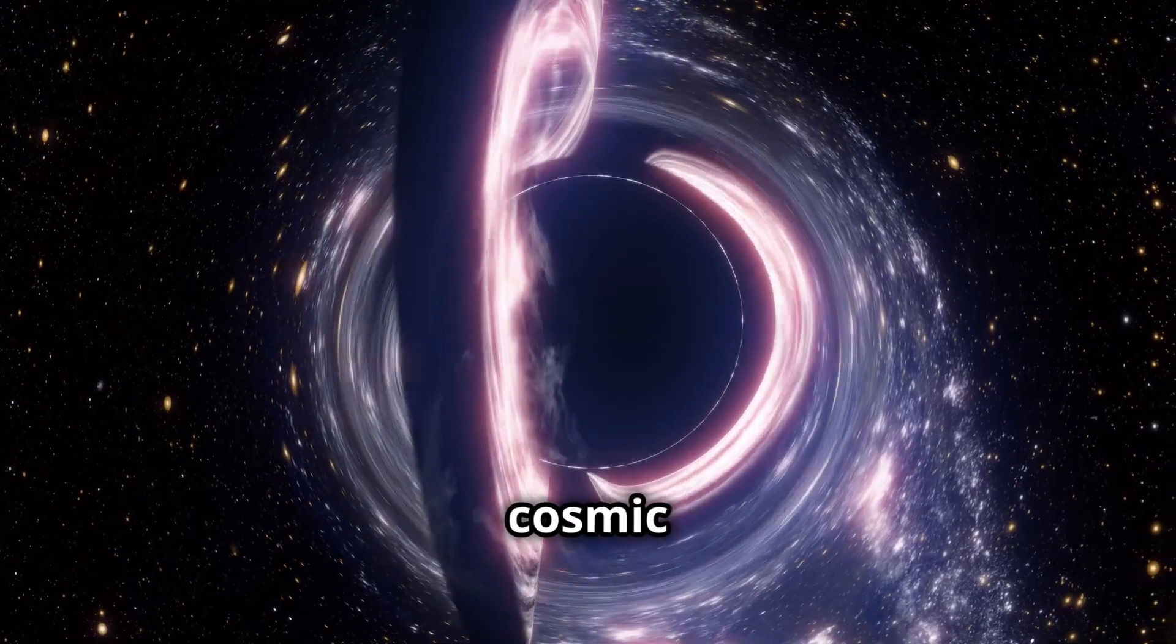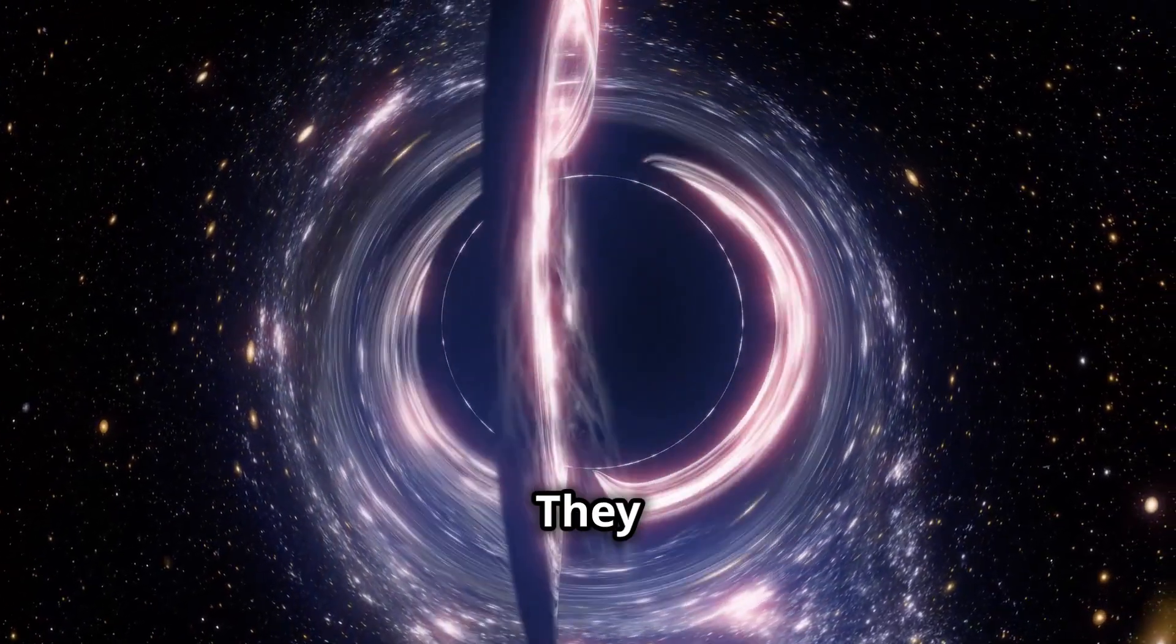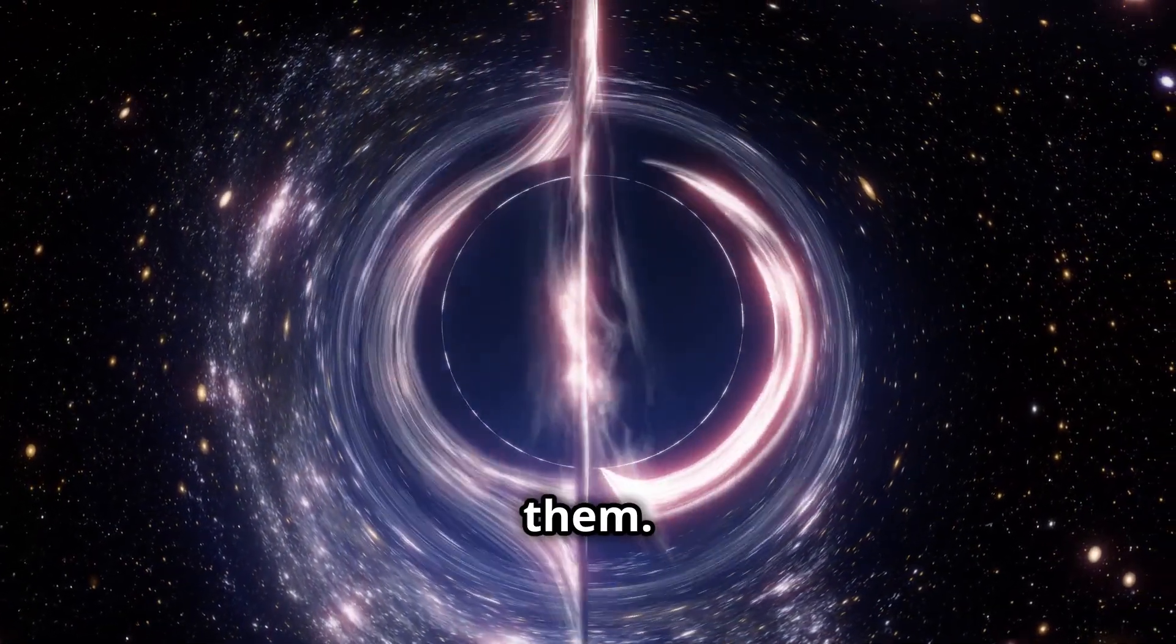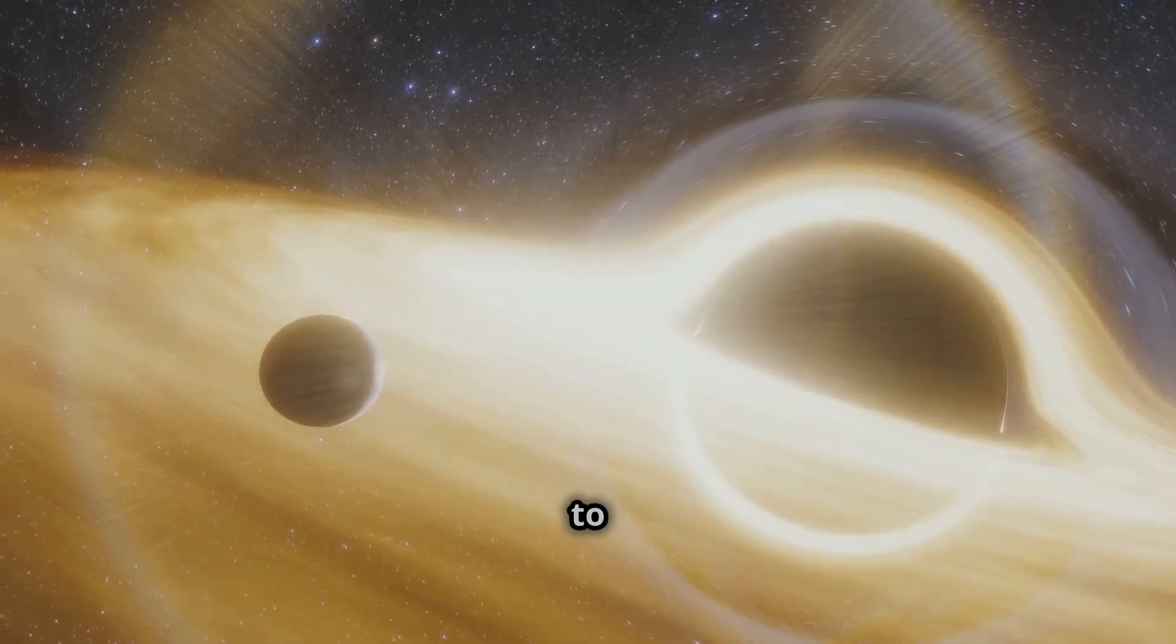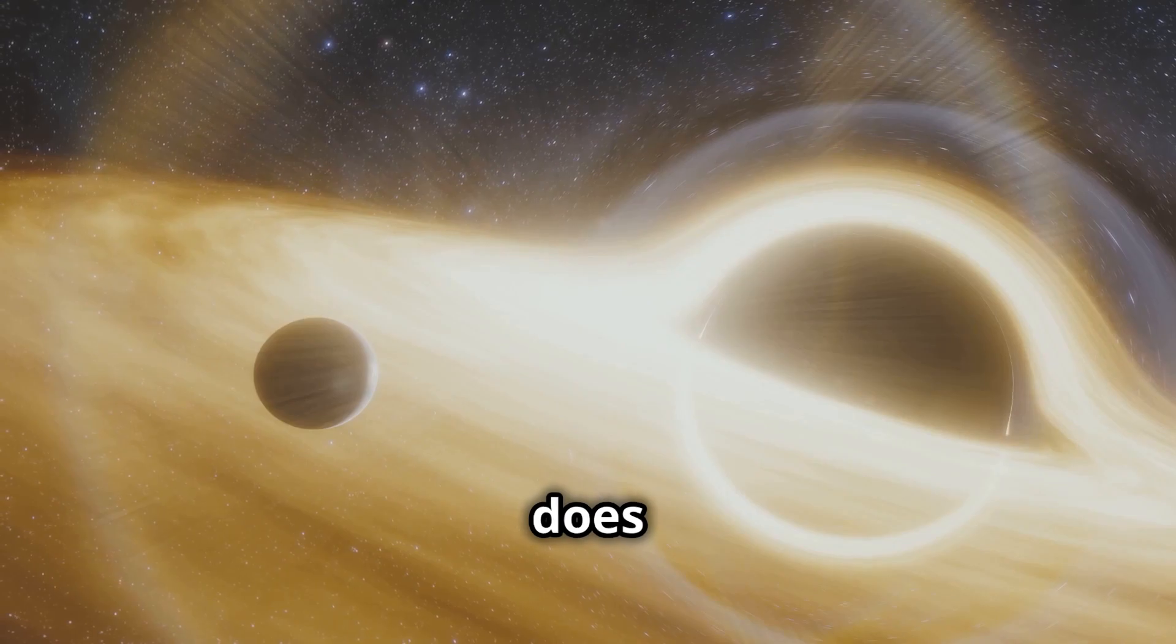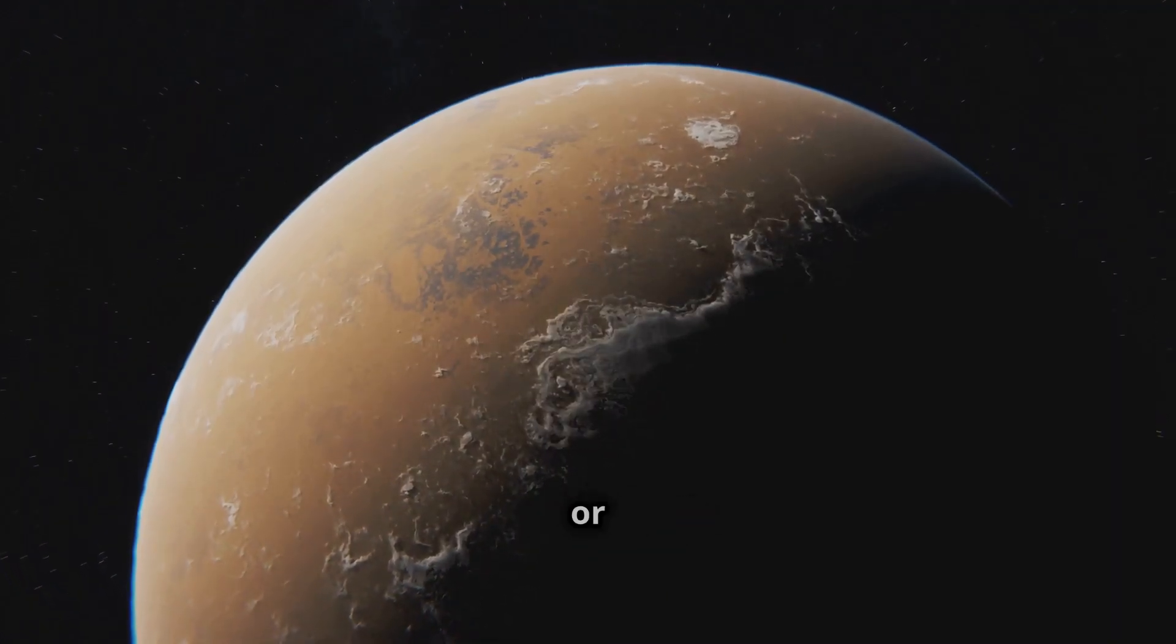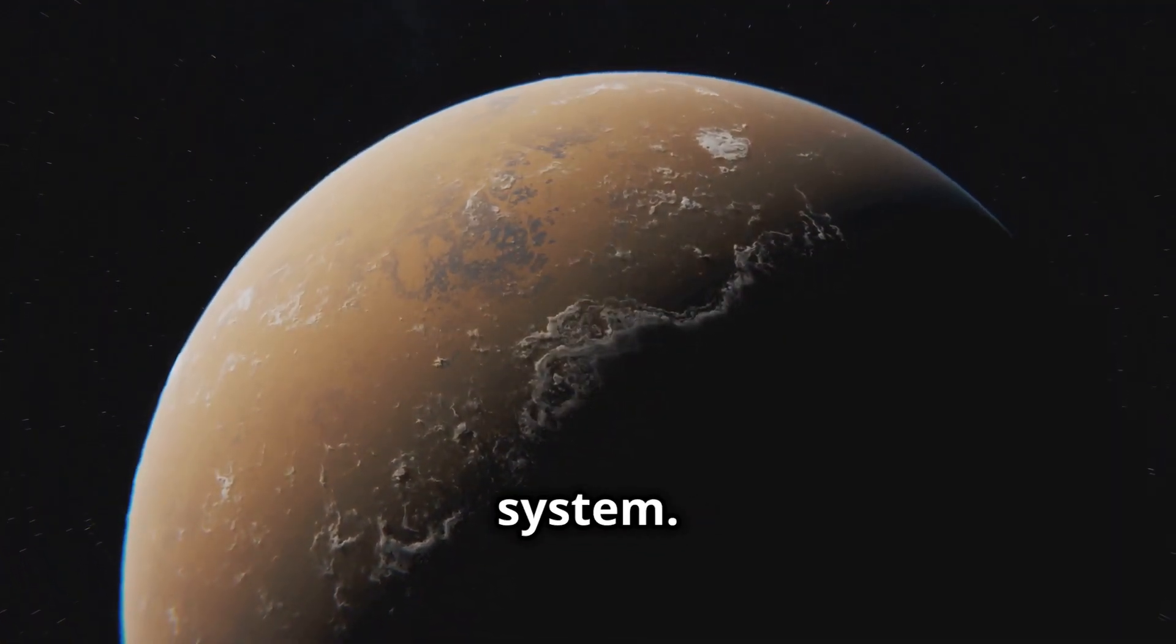Black holes are not cosmic vacuum cleaners. They don't suck up everything around them. If our sun were to become a black hole, Earth would continue to orbit it, just as it does now. The only difference is that there would be no light or heat coming from the center of our solar system.